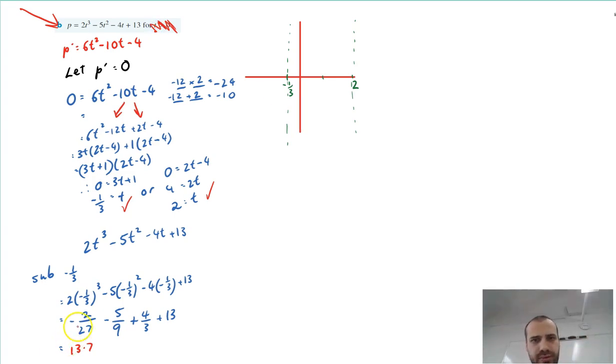So from negative one third. So the turning point is negative one third, 13.7. Negative one third, 13.7. So there's one turning point. The other turning point was at t equals 2.